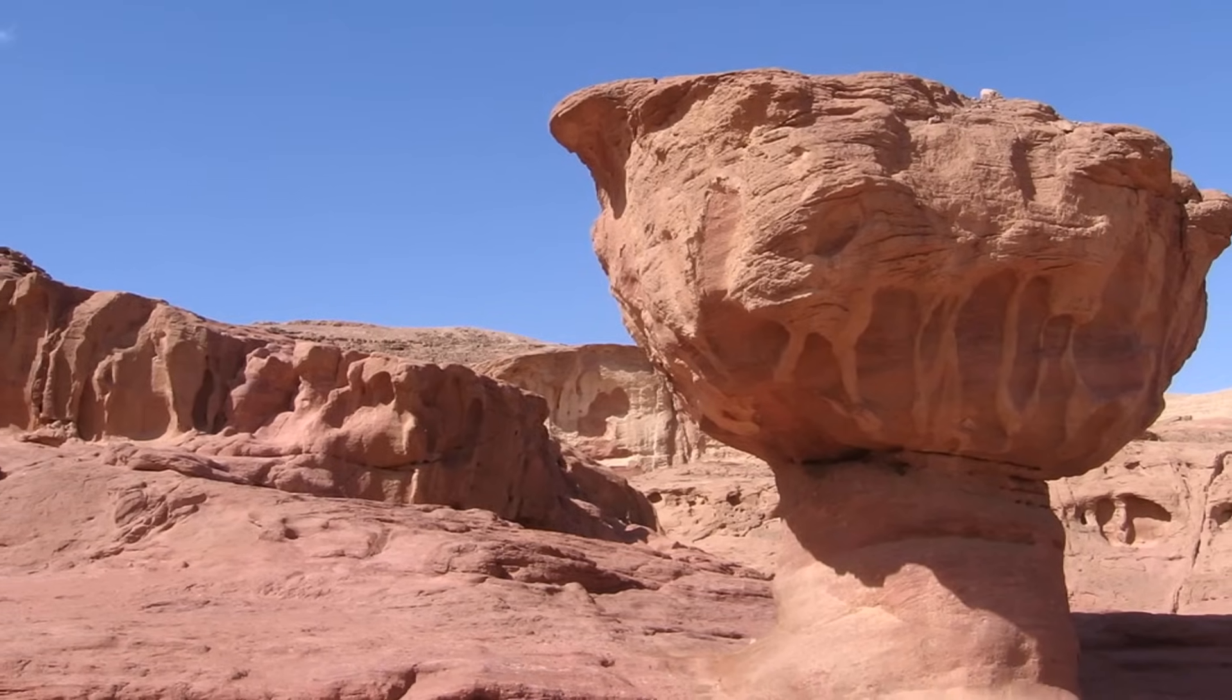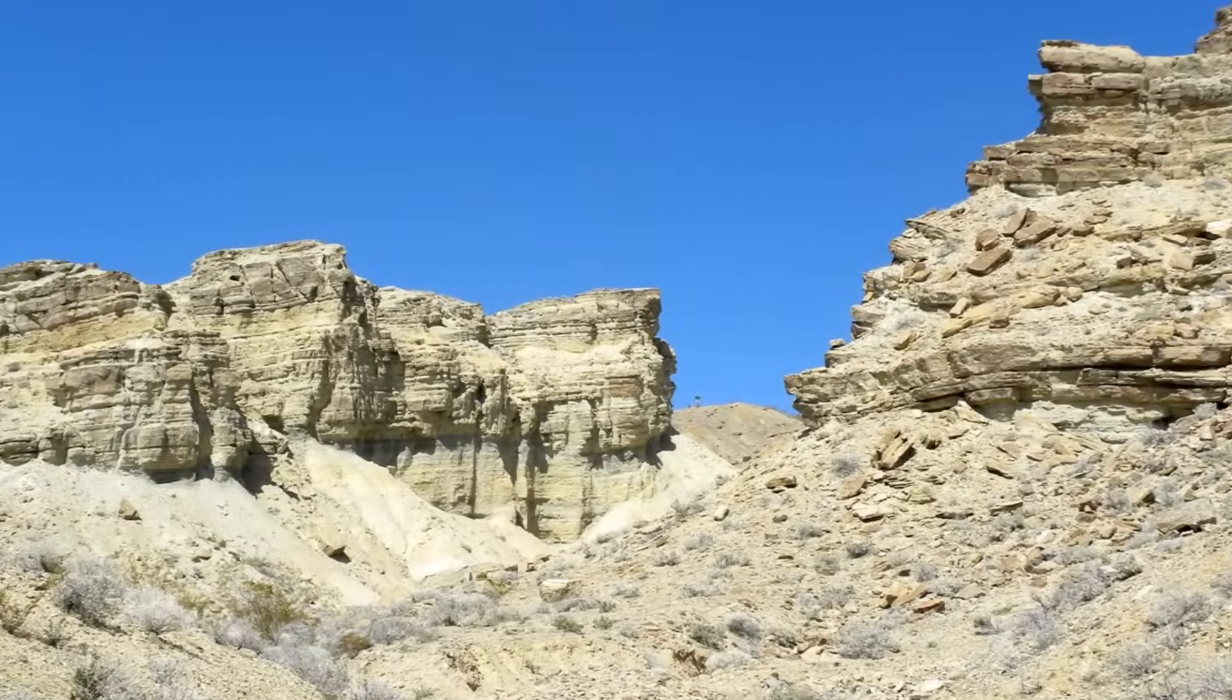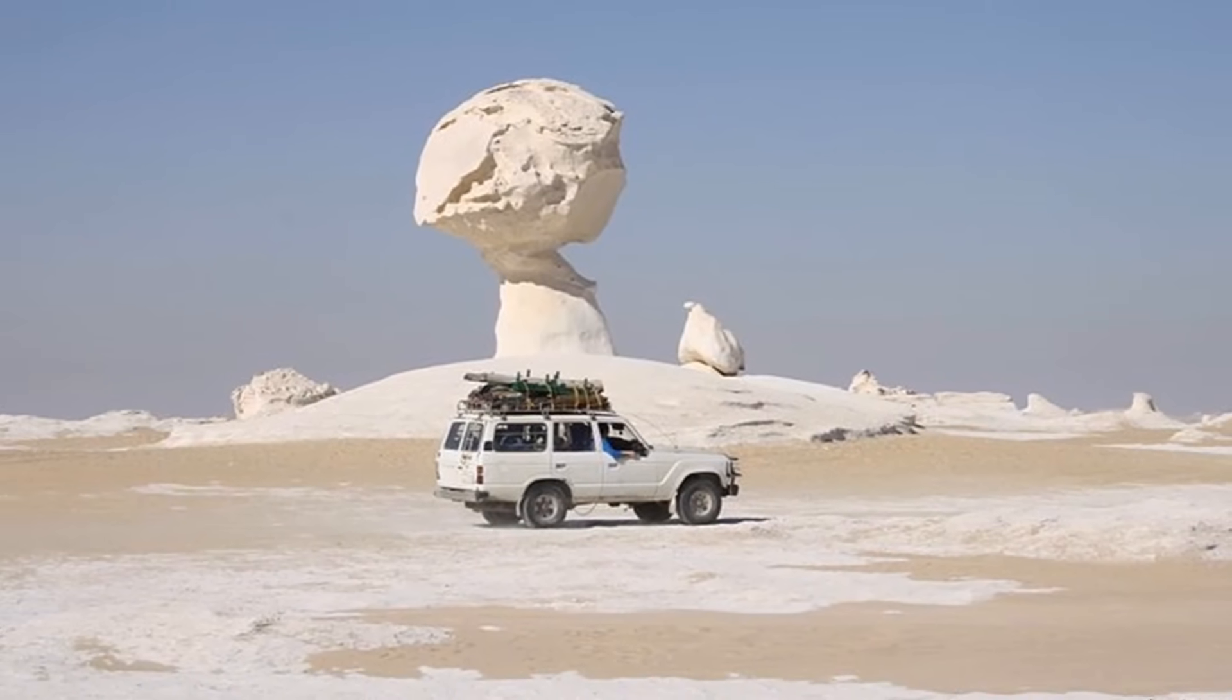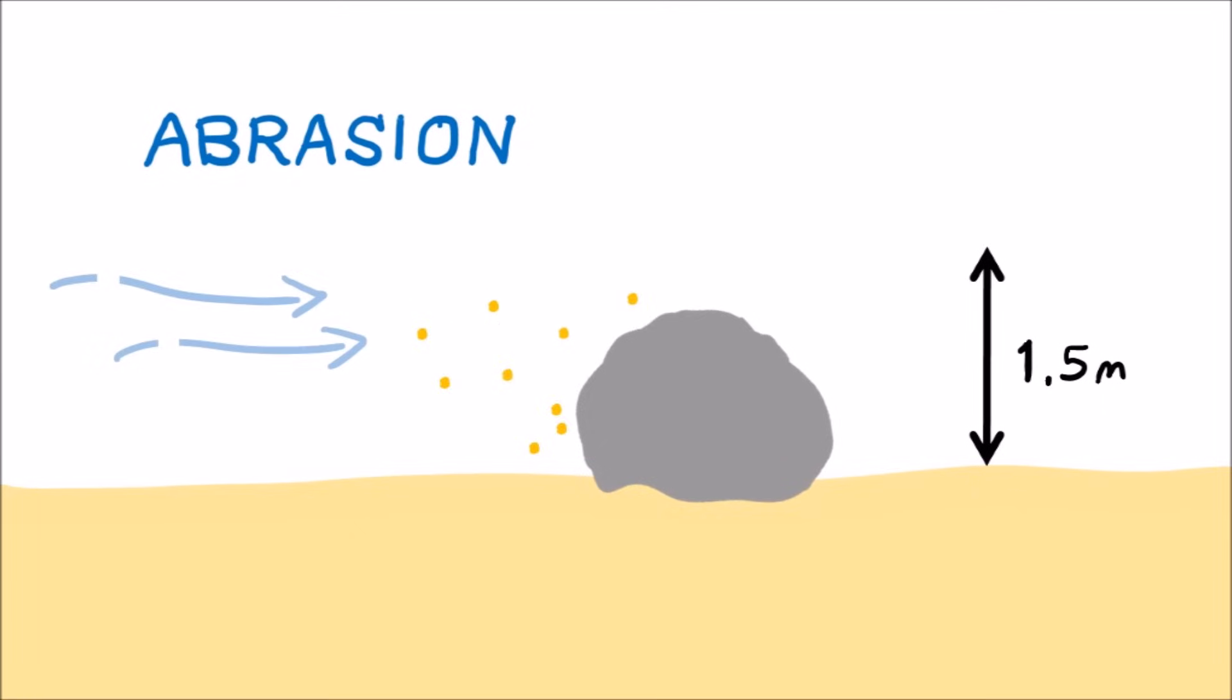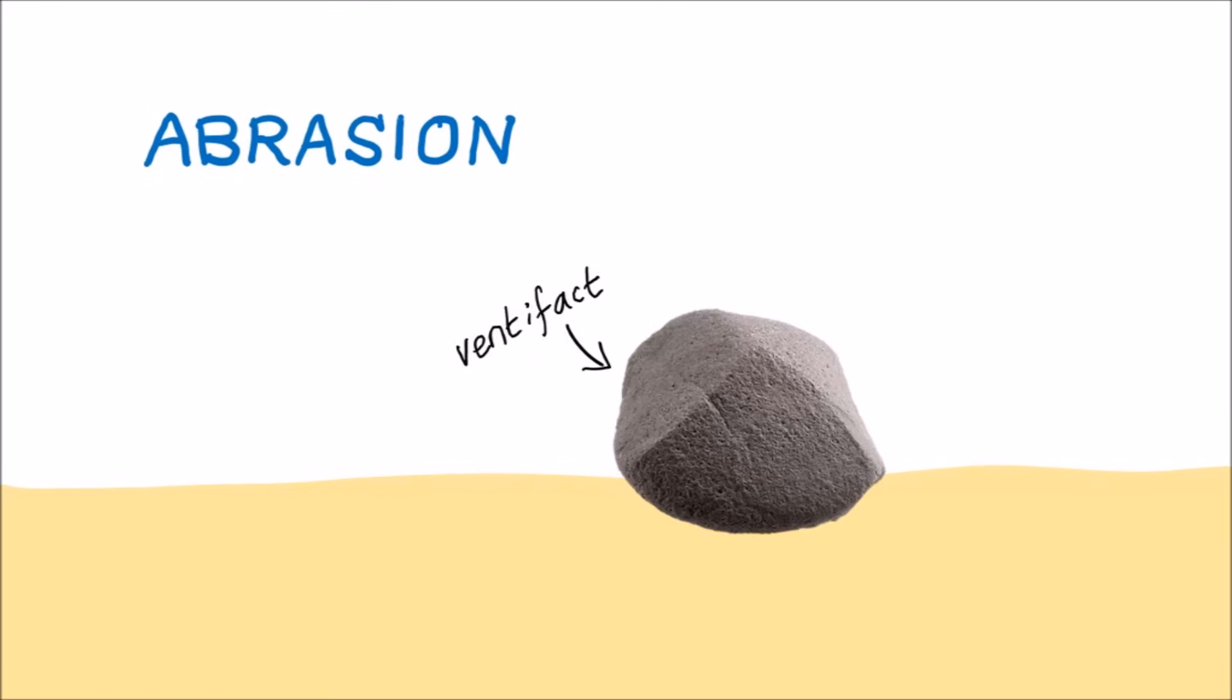Desert rocks are susceptible to abrasion because they don't have a protective layer of soil or vegetation so they are constantly exposed to the wind. Abrasion is most effective up to 1.5 meters from the ground because the wind carries more material at this height. Rocks that have flat sides due to abrasion are called ventifacts.